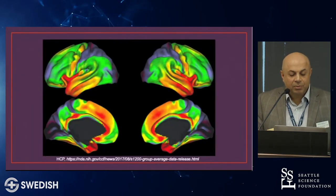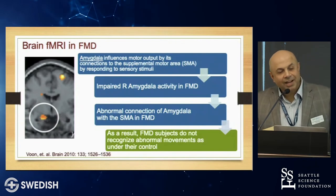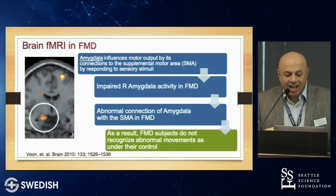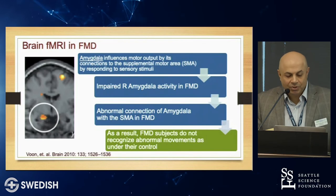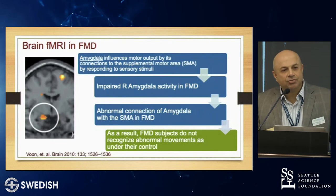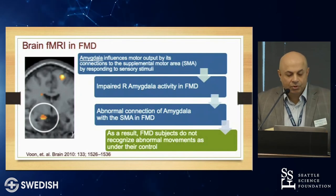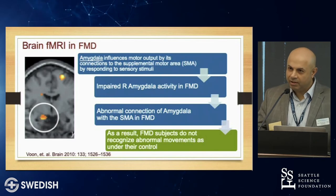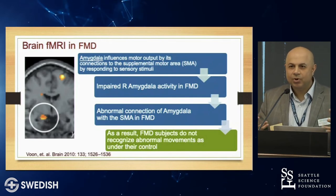A lot of studies have now shown that the amygdala — particularly the right amygdala, the emotional processing center — is abnormal in functional movement disorders. As a result, the connection between the amygdala and the sensory motor cortex is also abnormal. This has consistently been seen in small groups of people with functional movement disorders. Now we can say there's a biomarker — I can explain to the patient that their amygdala is not working well and it's not connected to the SMA. This is a brain disorder, a network problem, not just stress.